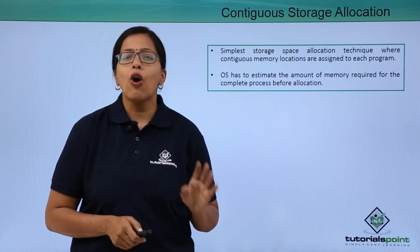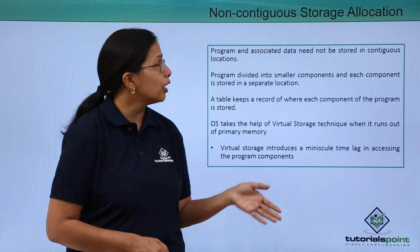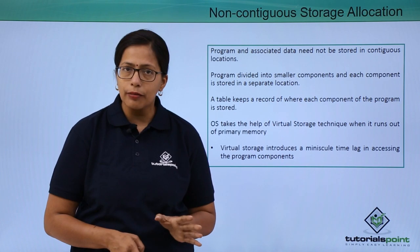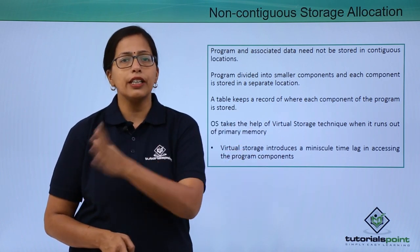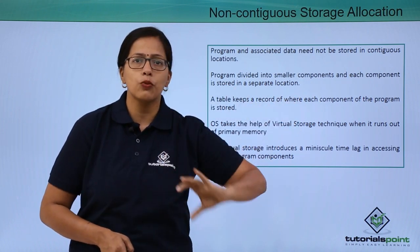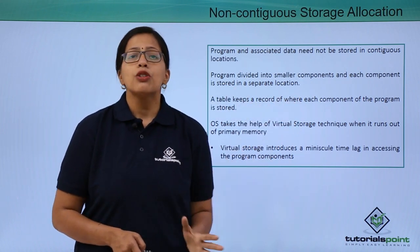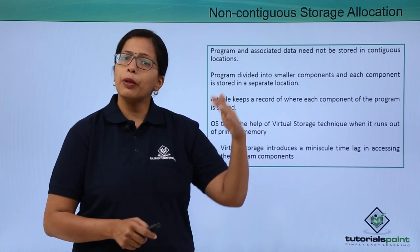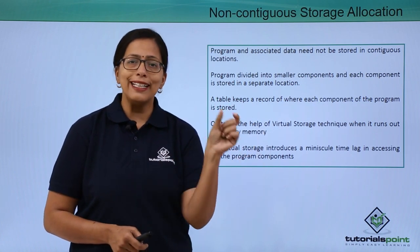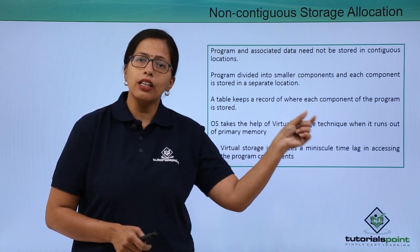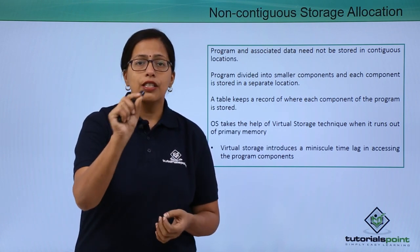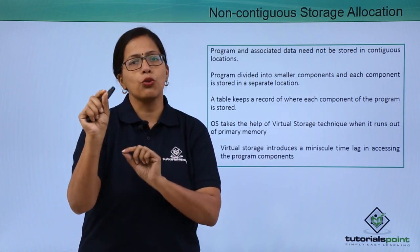So in reality the operating system will use a non-contiguous storage allocation technique. Non-contiguous means non-continuous. There are chunks of memory available at different locations, so the operating system will break down the program into different segments and each segment will be stored in one location. It will have a table where the memory address of the starting location will be stored.